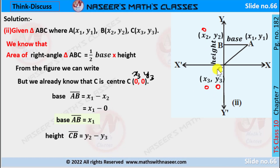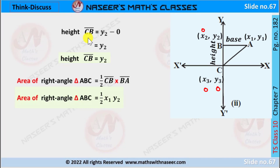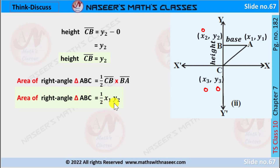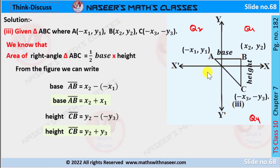The height is CB, which is the difference between y2 and y3. Since y3 is 0, height CB equals y2 minus 0, so height equals y2. Substituting these values into the formula, the area of triangle ABC is 1/2 times x1 times y2.